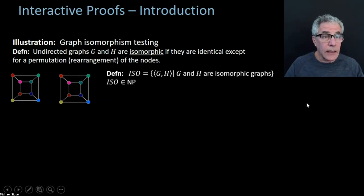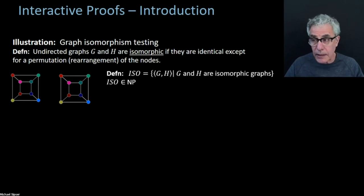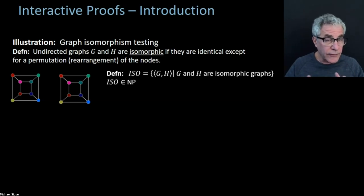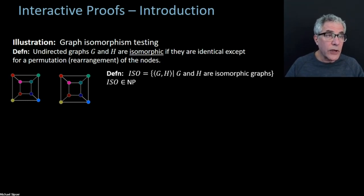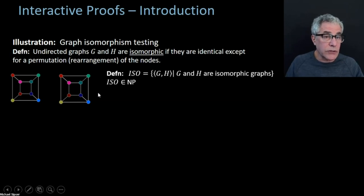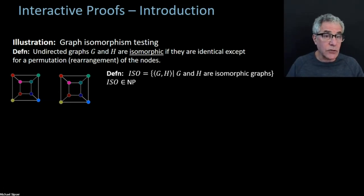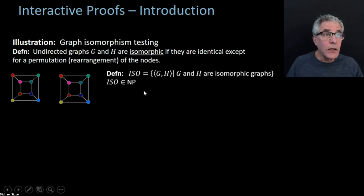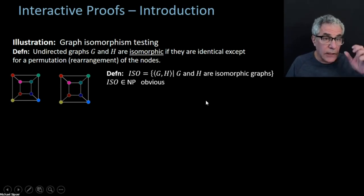It's easy to see that this problem is an NP problem. Because all you need to do in order to give a certificate that the two graphs are isomorphic is to say which nodes in one graph correspond to which nodes in the other graph. Then all you need to check is that the edge relationships are consistent with that mapping, or that isomorphism, as it's called. So it's easy to see that the ISO problem is in NP. Make sure you understand this, because the whole first part of the lecture will be lost if you don't understand the ISO problem.